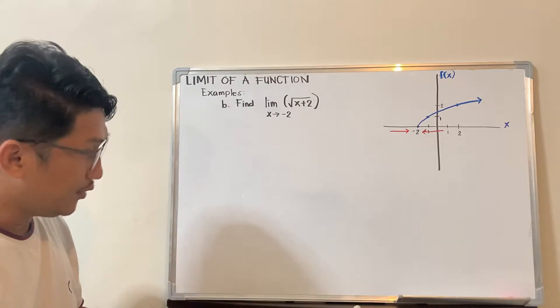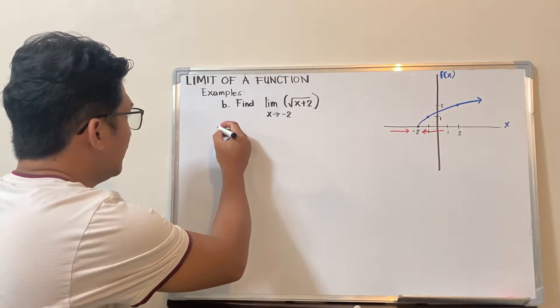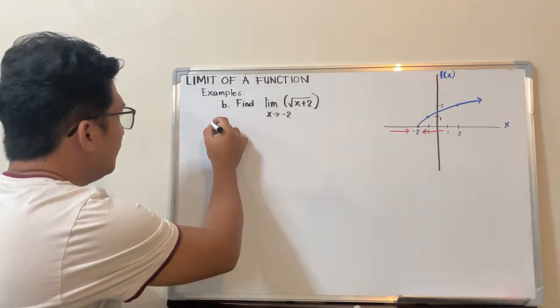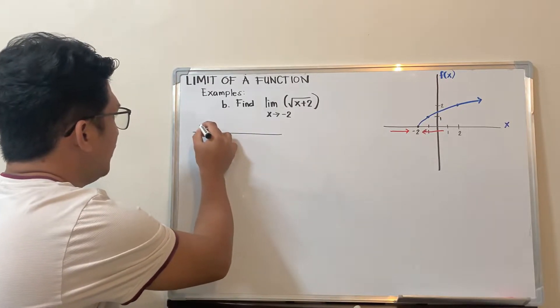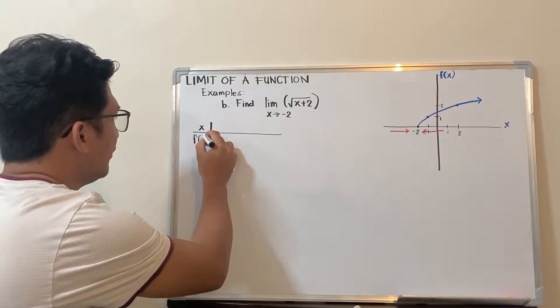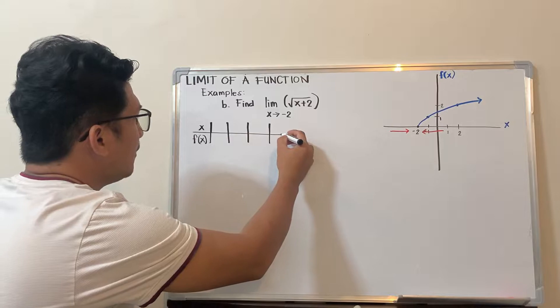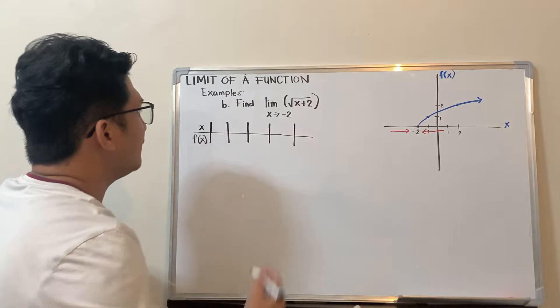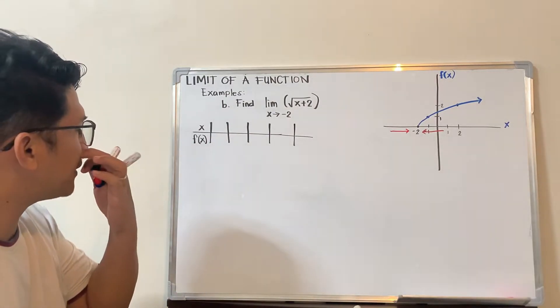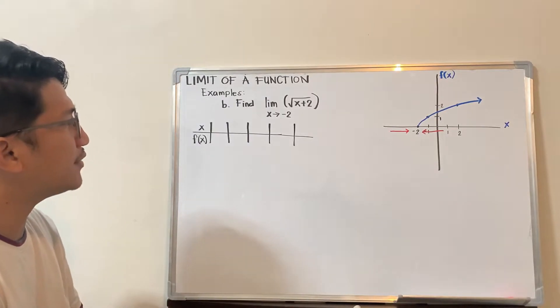If we make a table of values, this will be our table: x and the f(x) values. From the left, consider five values. You can choose how many values you want, but the fewer, the better, so it's less work to do.